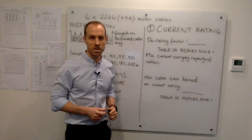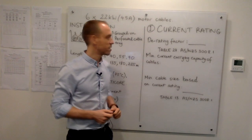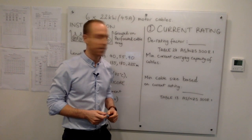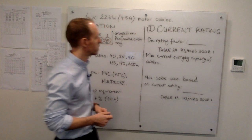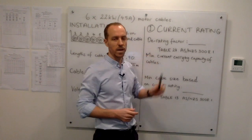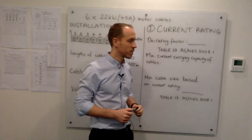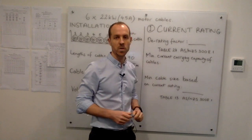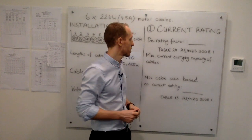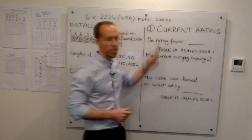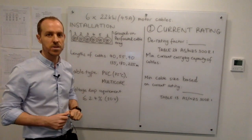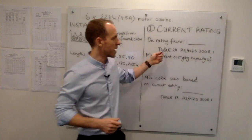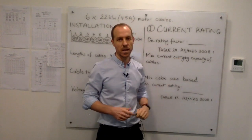The first step is to work out the minimum conductor size based on the required current rating. We're going to need a derating factor to work out the minimum current capacity required for the cables. So we're going to look up a derating factor for this installation condition, referring to table 24 in AS3008.